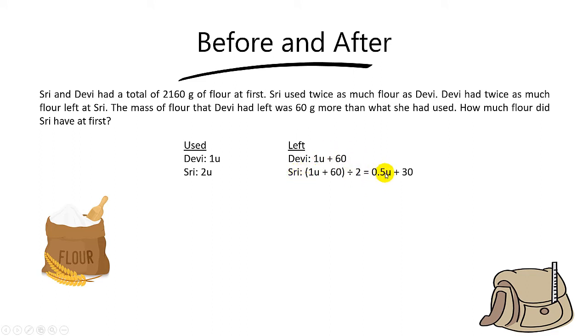So divided by 2, you get half a unit plus 30. Understand? Because 1 divided by 2 you get half a unit, while 60 divided by 2 you get 30.